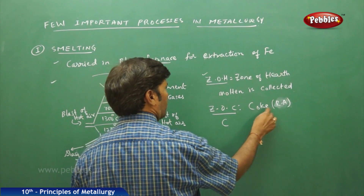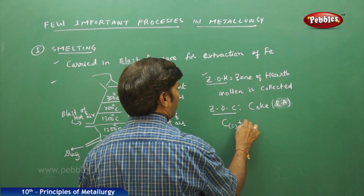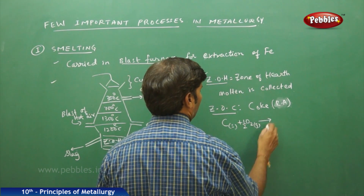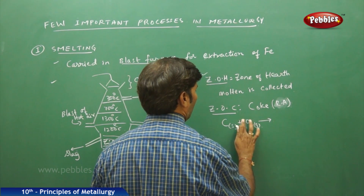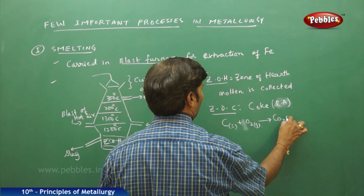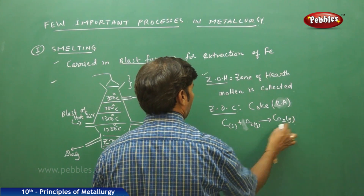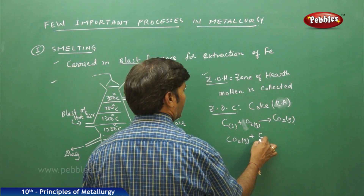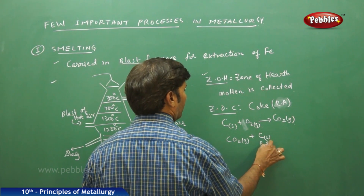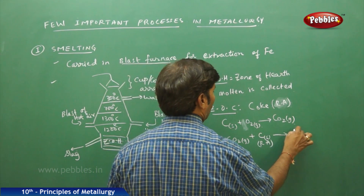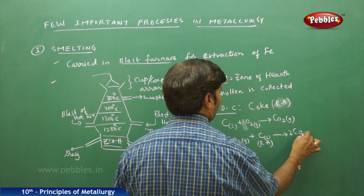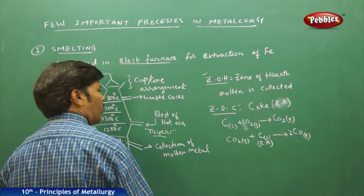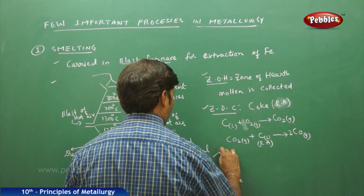In the Zone of Combustion, carbon solid reacts with oxygen gas: C(s) + ½O₂(g) → CO₂(g). This carbon dioxide then reacts again with carbon solid acting as a reducing agent to form carbon monoxide gas: CO₂ + C(s) → 2CO(g).